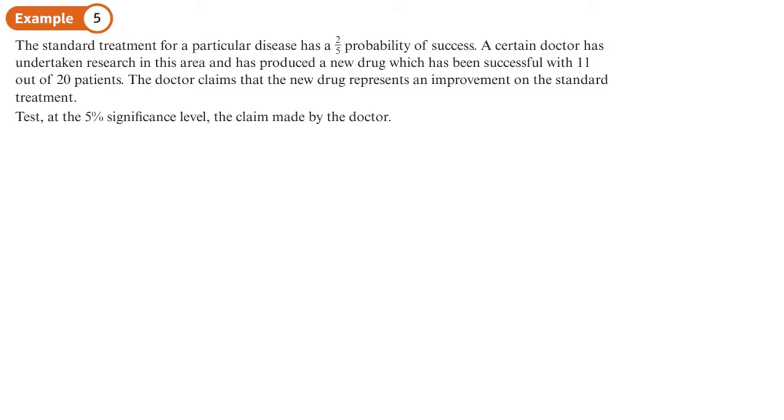So the first thing, what is the normal proportion or probability of success of this drug? Two-fifths, so that's H₀. H₁, what is this person claiming? That it's been an improvement, so in other words that the probability of success is greater than two-fifths.